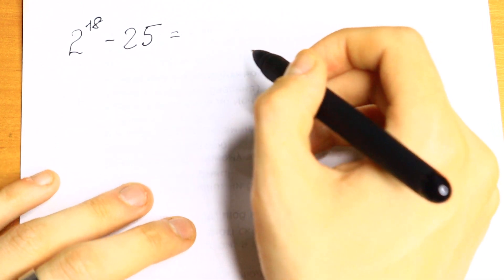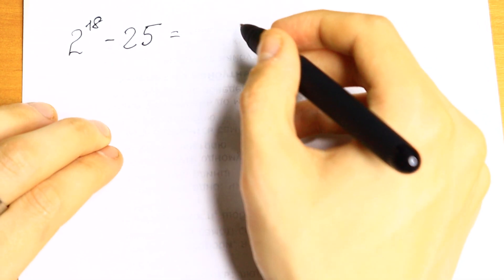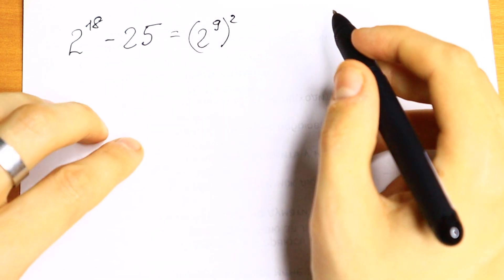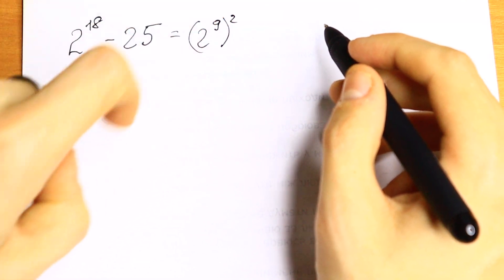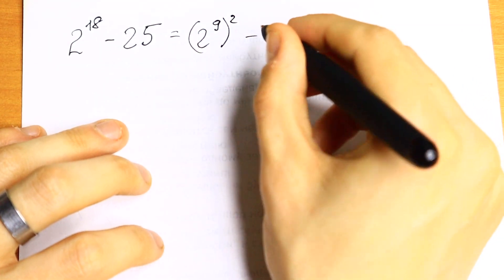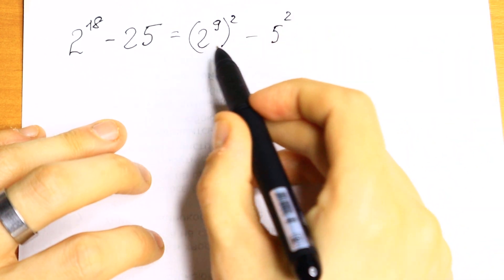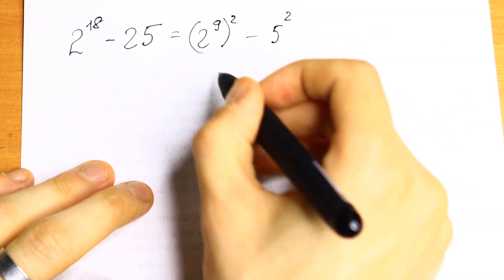How can we solve it? Take a look. We can write this 2 to the 18th power as 2 to the 9th power square. So this will be the same but we have some number to the second power. And we can write this 25 as 5 square. So as you can see we have difference of squares.